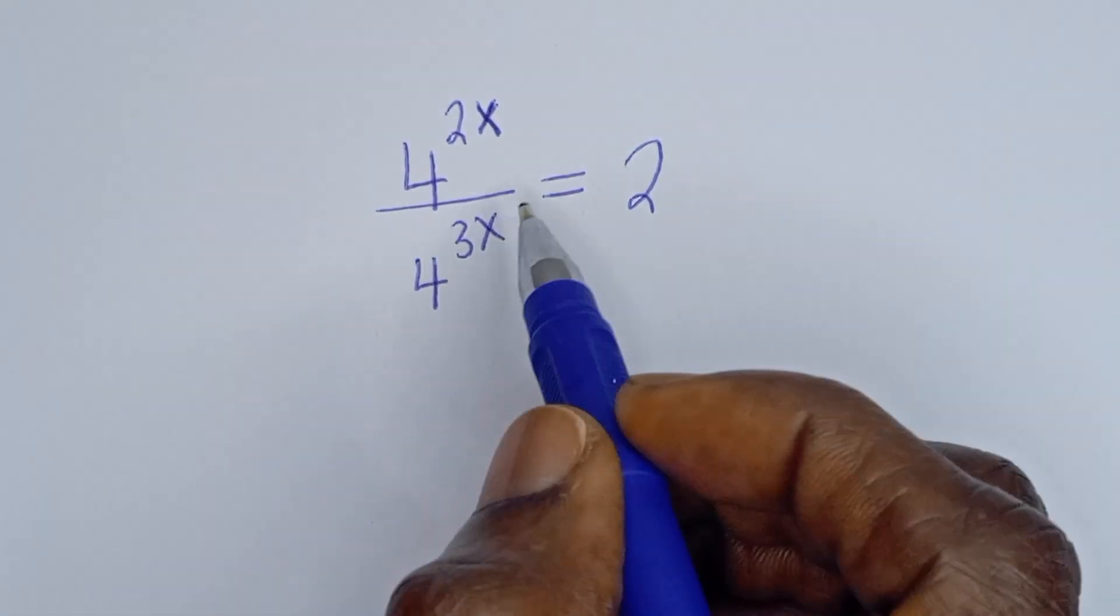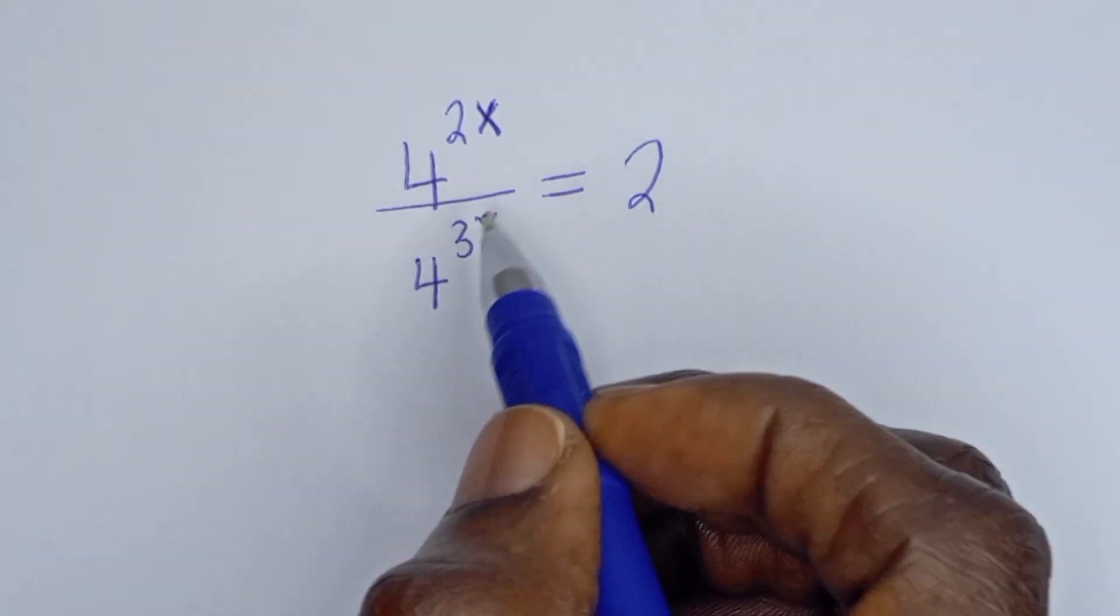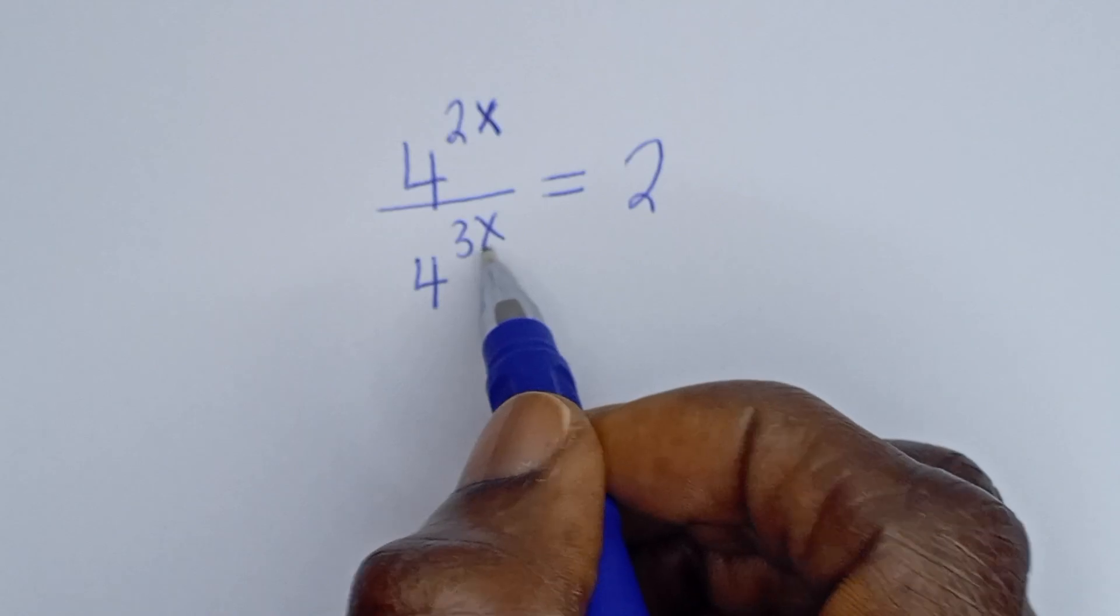How to solve for s from this given nice exponential equation: 4 to the power of 2s divided by 4 to the power of 3x is equal to 2.